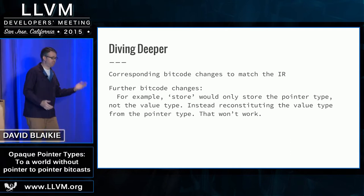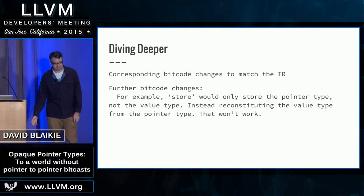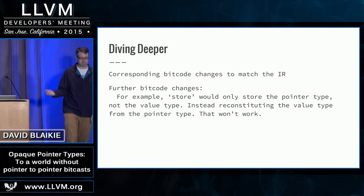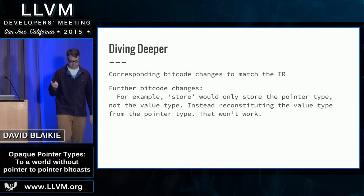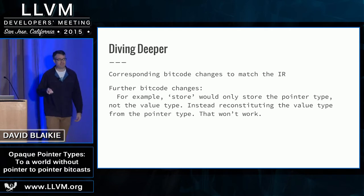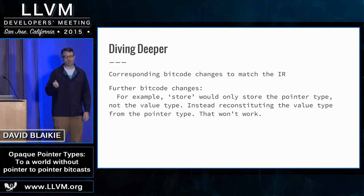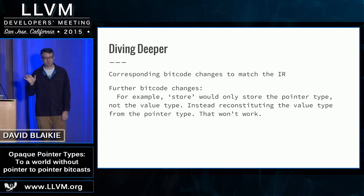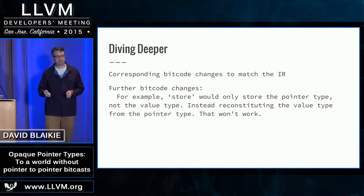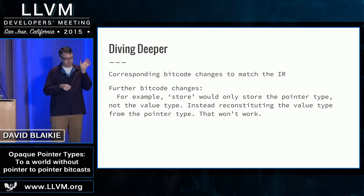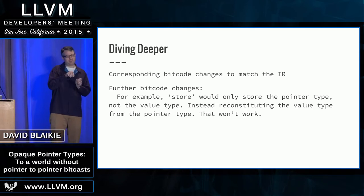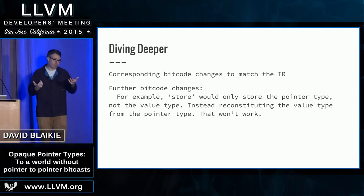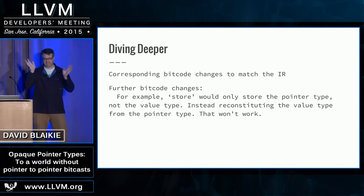Bitcode had the same problem as textual IR. It has the advantage it doesn't have a lot of migration to do, but the disadvantage that backwards compatibility is still necessary. Interestingly, the store instruction — which I wasn't expecting to have to touch — had a bitcode dependence on this, because it stored the type once. Bitcode deserialization, much like textual IR, is a little weird: it has the type at the usage point and uses that as part of the deserialization mechanism. So the store would store the pointer type, but use the value from that pointer type to figure out how to read its value parameter — the actual i32, for example, that you might be storing.